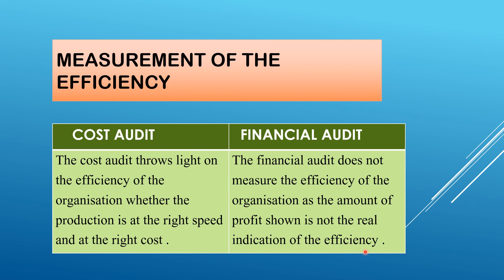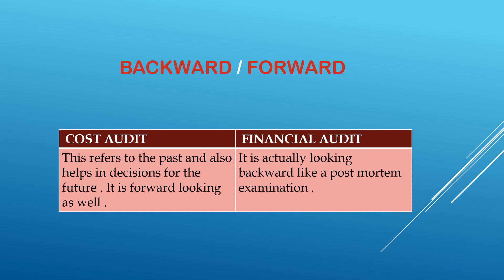Regarding backward and forward orientation, cost audit refers to the past but also helps in decision making for the future — it is forward looking as well. The cost auditor gives suggestions on how to reduce cost at every stage of production. But financial audit is actually looking backward, like a post-mortem examination. The financial auditor is not concerned with your future plans; he only checks whether everything has been properly recorded in your profit and loss account.